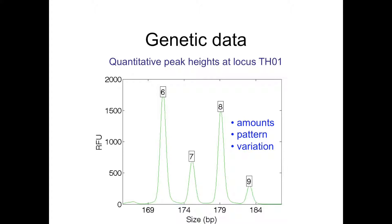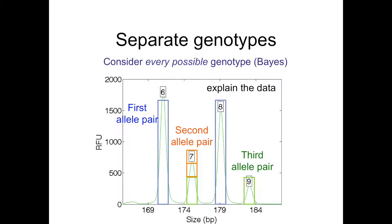For example, the 6 and 8 peaks may represent roughly the same amounts of DNA from one person, but you see variation in peak height. Applying a likelihood function is then done to separate genotypes — the likelihood is the concept of how you explain the data. Considering every possible explanation, here's one such explanation: in blue, there's a first allele pair at 6 and 8; a second allele pair homozygote for 7; and a medium amount of DNA for a third allele pair that's a 7 and 9. Adding up the different allele pairs, the pattern of heights closely matches the observed data, conferring higher probability to a separated genotype.